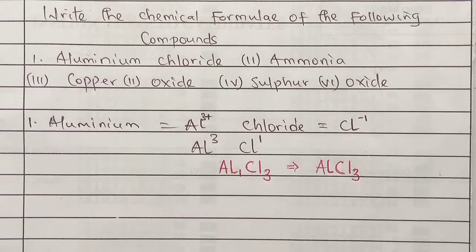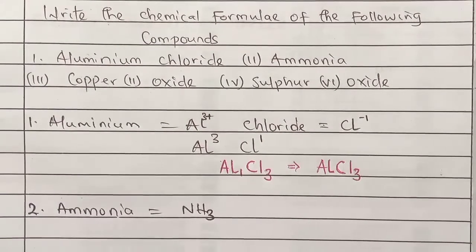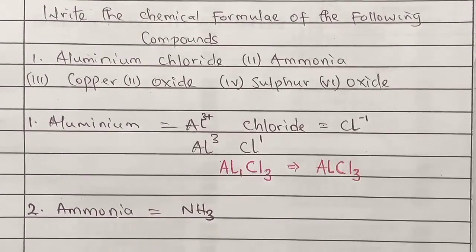For ammonia: ammonia is a special case, just like water. Water is H2O but it does not strictly follow the direct naming convention — it should be called hydrogen oxide, and it is in fact an oxide of hydrogen, but it has the special name 'water'. Similarly, ammonia is a hydride of nitrogen, and its chemical formula is NH3. No need to derive it step by step; it has a special name just like water.